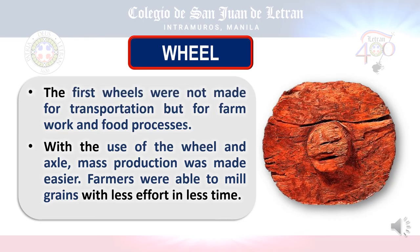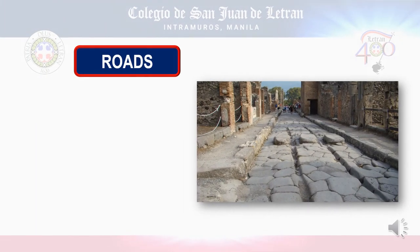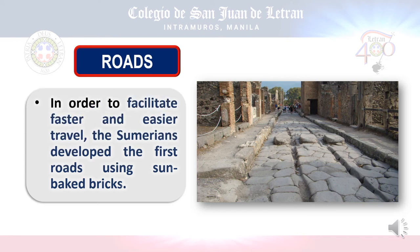The first wheel was made not for transportation but to mill grains, and was invented to solve problems in mass production in terms of food supply. Roads were also invented to address problems in transportation and navigation, in order to facilitate faster and easier travel — particularly to search for food and find better places. They built roads using sun-baked bricks.